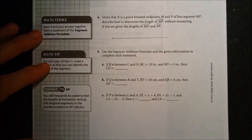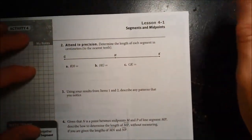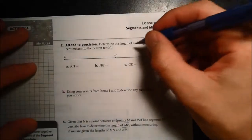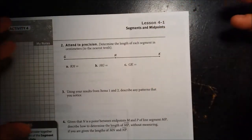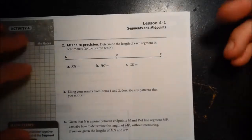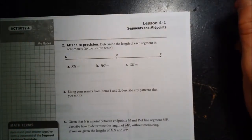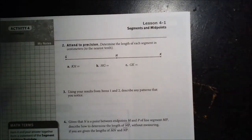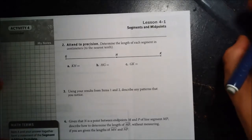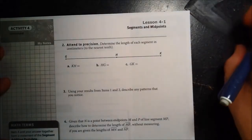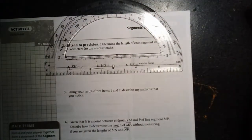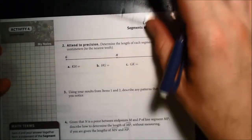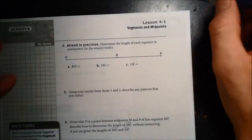Moving to the next page, item 2 says attend to precision — determine the length of each segment in centimeters to the nearest tenth. To save some time, I'm going to pretend you got your ruler out. It's not a bad idea to pause the video and practice if you have a ruler — it's a good skill to know how to use.